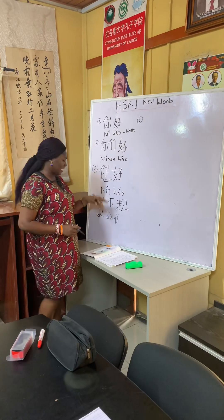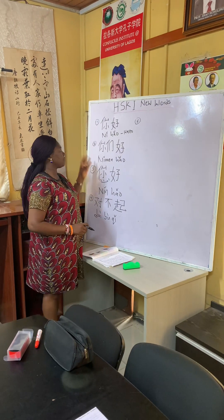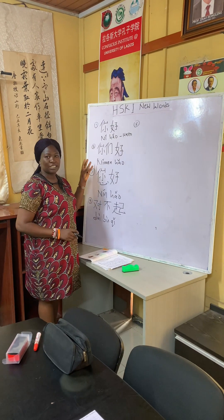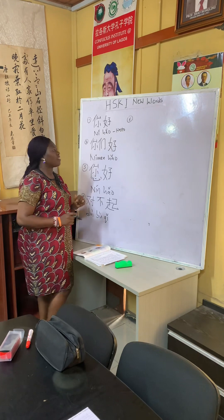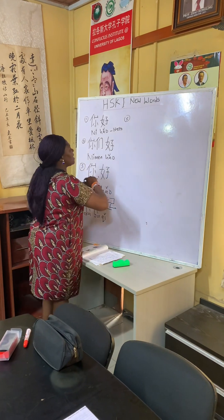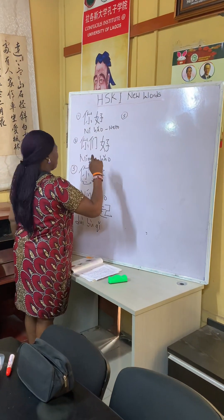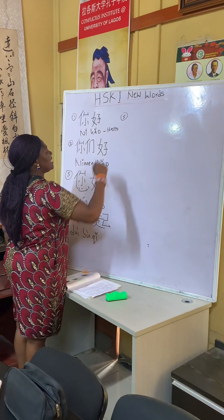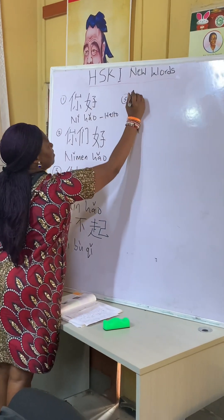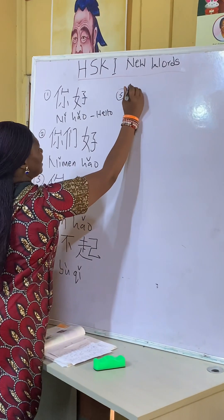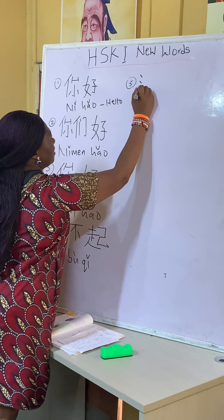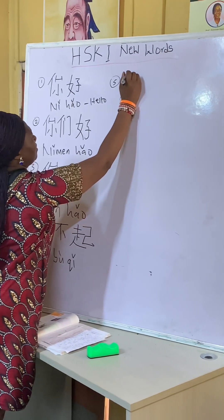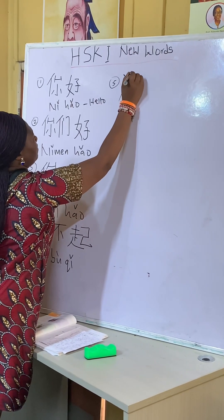In HSK 1 textbook Chapter 1, number five is 没关系 (méi guān xi). When writing 没 (méi), the first thing is the water radical 氵, then with 又 (yòu) and down strokes. That is the water radical.